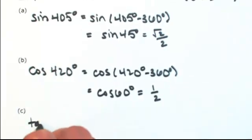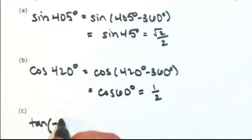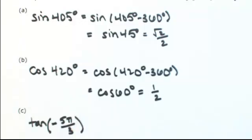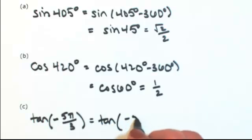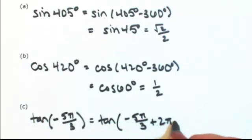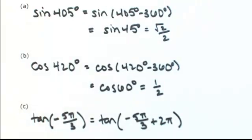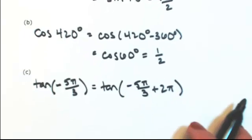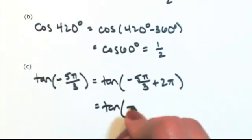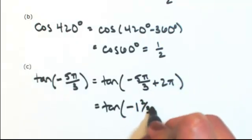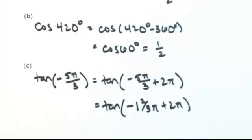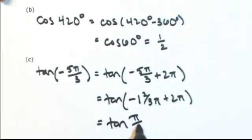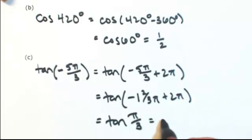Let's do one with radians. Let's say we have the tangent of negative 5 pi over 3. Since this is negative, let's add, in this case radians, so add 2 pi. It might help me to rewrite negative 5 pi over 3 as a mixed number. So this is negative 1 and 2 thirds. Negative 1 and 2 thirds plus 2, you're left with a third. So this is the tangent of pi over 3, and we know that's the square root of 3.